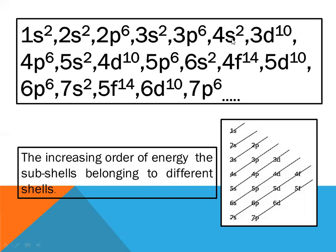Then 4p⁶, 5s², 4d¹⁰, 5p⁶, 6s², 4f¹⁴, 5d¹⁰, then 6p⁶, 7s², 5f¹⁴, 6d¹⁰, 7p⁶ and so on. Observe the diagram. According to the Aufbau principle, the lowest energy level will be filled first.